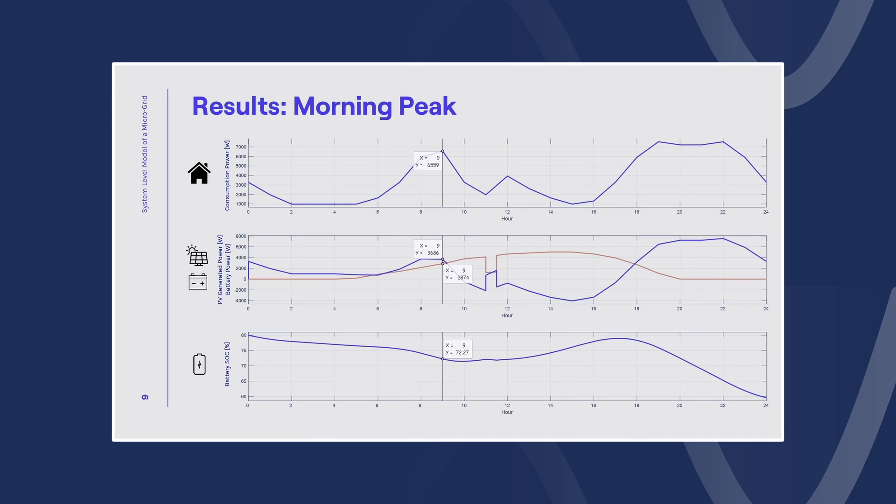Speaking of the results, let's explore them together now. In the results, we have a figure with three subplots. First, we have a consumption power of the households. And then on the middle plot you can see the PV generated power that is highlighted with rose color and the battery power highlighted with blue. And the last plots show the battery state of charge.